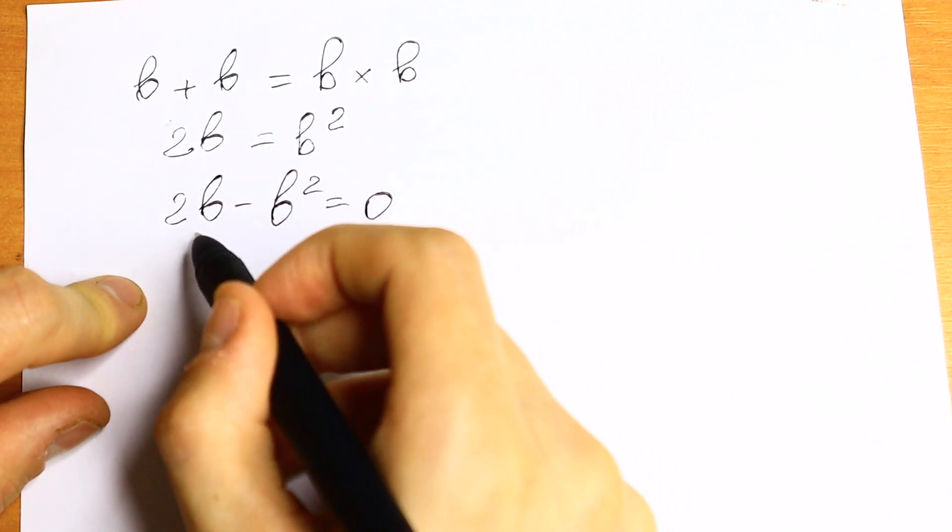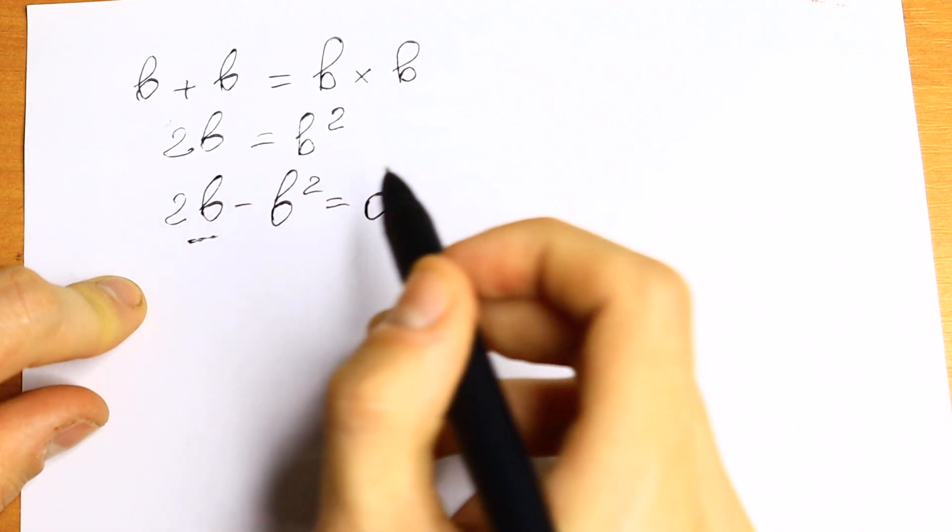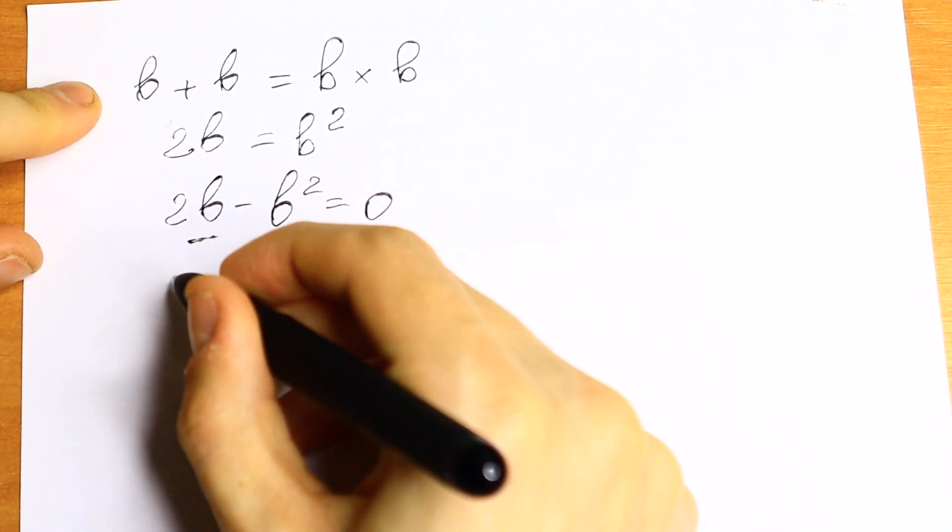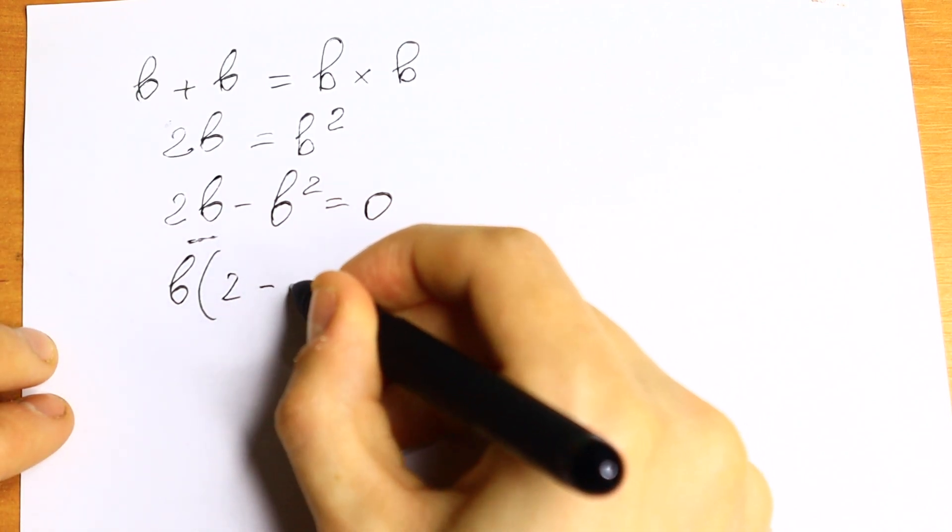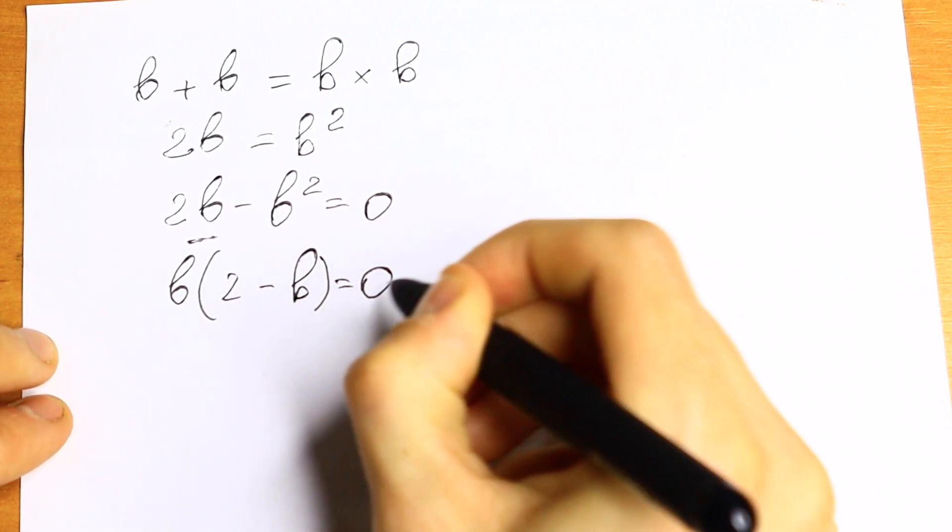As a result, we have b and we have b times b, so we can factor out one b. So we will have b, and in parentheses we will have 2 minus b, equal to zero.